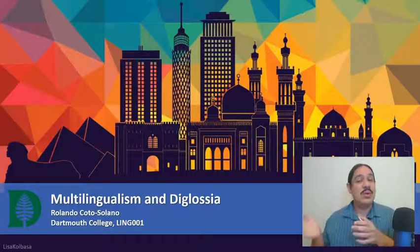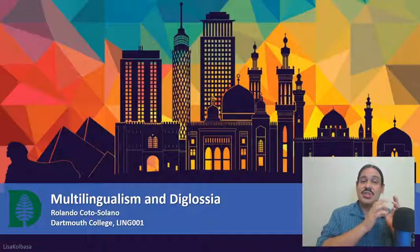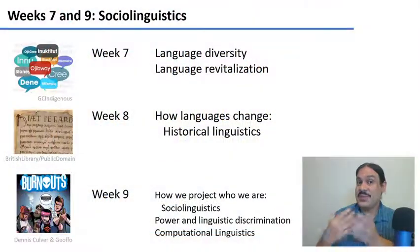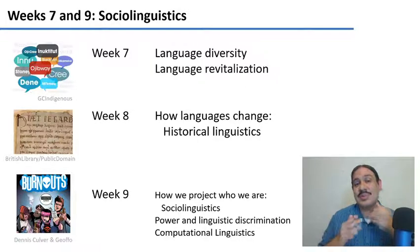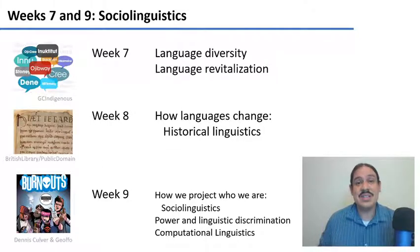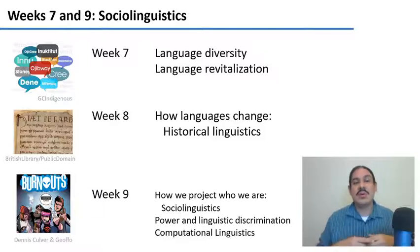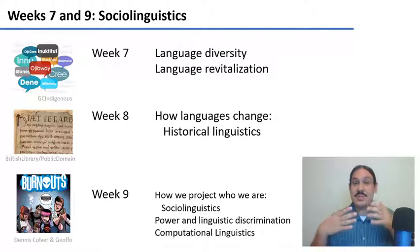Over the next three weeks, we'll use that knowledge to look at how languages are used in human societies. On week seven, we will start looking at sociolinguistics, which is the relationship between language and society, by studying language diversity and language revitalization. We will look at multilingualism and societies that have many languages and how people choose one language over the other. We'll also look at language revitalization, which is the effort to make sure that there are speakers for the indigenous languages of the world.